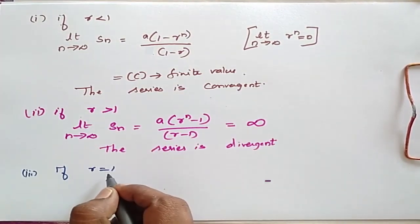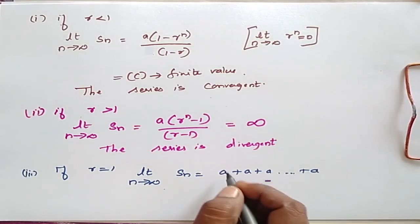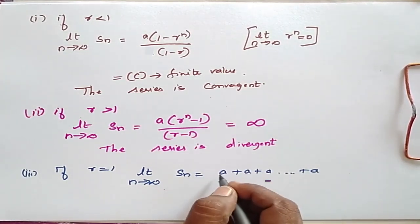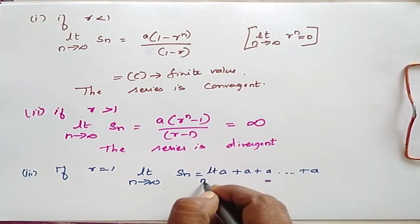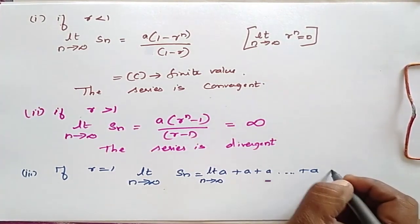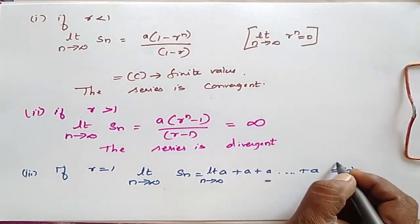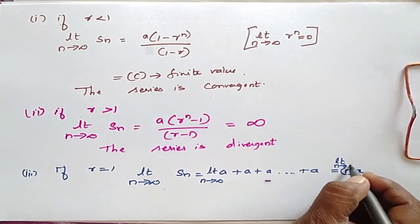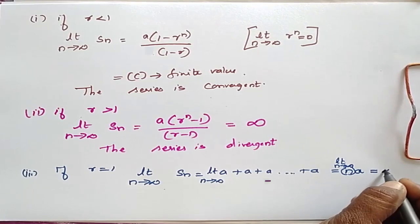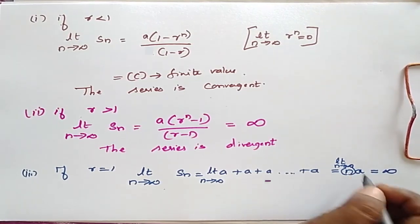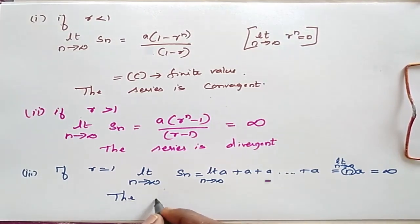If r is equal to 1, the series becomes a + a + a + a + ... So S_n equals n times a. Taking the limit as n tends to infinity, this equals infinity. So again, the series is divergent.